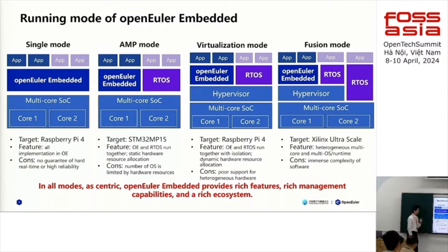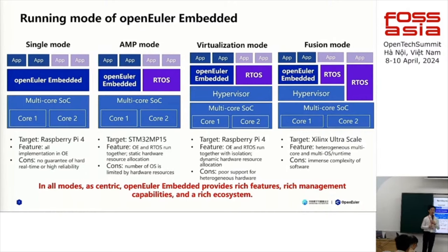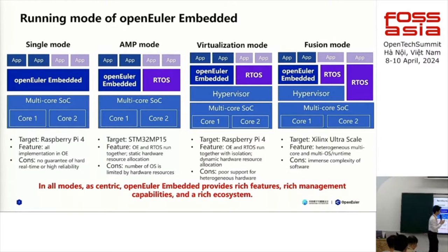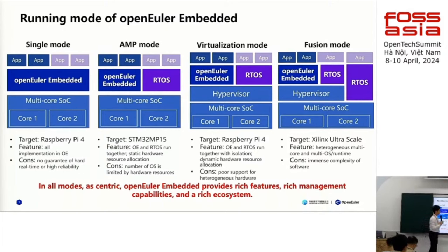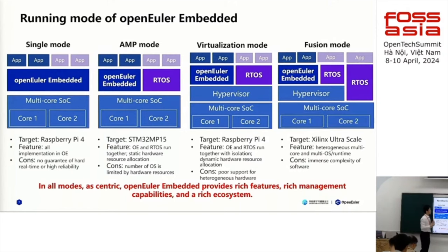The disadvantage of AMP is that the number of OS is limited by hardware resources — if we only have four CPUs, we cannot run five OS. To resolve this, we introduce virtualization mode, which uses virtualization technology to provide, in theory, an unlimited number of operating systems on a resource-limited hardware platform. However, because of poor support for heterogeneous cores, a hypervisor can only run on homogeneous core clusters. As a result, we have a fusion mode: we run AMP mode for heterogeneous cores and virtualization mode for homogeneous cores.